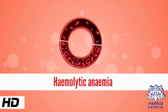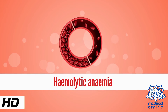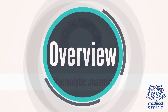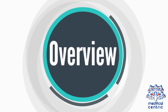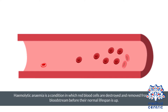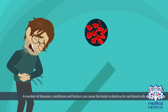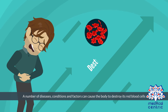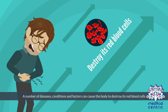Today's topic is hemolytic anemia. Hemolytic anemia is a condition in which red blood cells are destroyed and removed from the bloodstream before their normal lifespan is up. A number of diseases, conditions, and factors can cause the body to destroy its red blood cells.